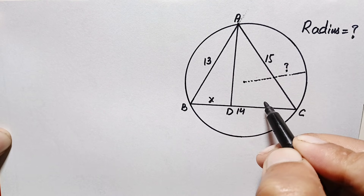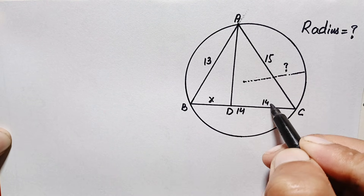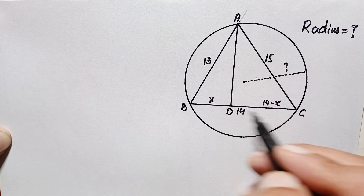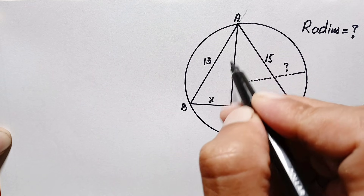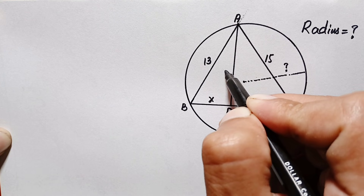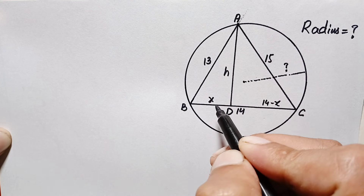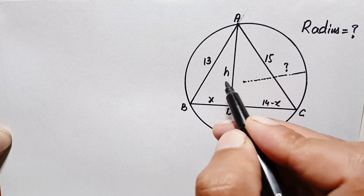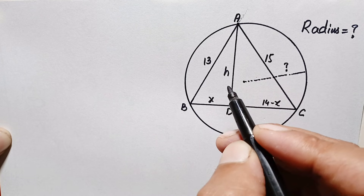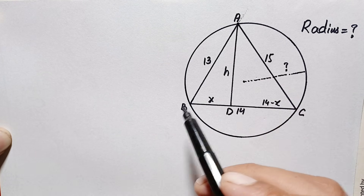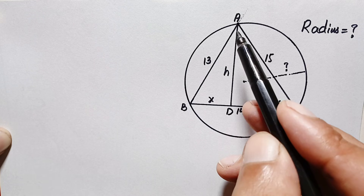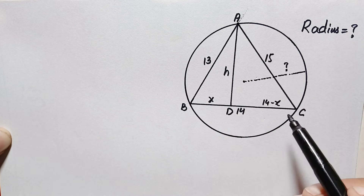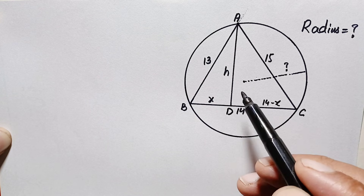So the length DC will be 14 minus x units. Let us suppose AD, which is perpendicular to side BC, is the height of this triangle, so let us suppose this is h. Before finding the radius of this circle, we will find the values of x and h. In triangle ABC, we have two right angle triangles inside: triangle ABD and triangle ADC.